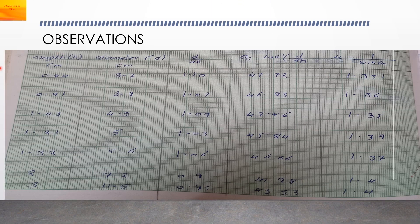Observations: The depth of the water is changed to values of 0.84, 0.91, 1.03 cm and so on, and for each depth the diameter of the dark ring is measured as 3.7, 3.9, 4.5 cm respectively. The depth is measured using vernier calipers and the diameter on the graph paper. Then d/4h is calculated, followed by the critical angle θc = tan⁻¹(d/4h), and finally the refractive index μ = 1/sin θc. The values of refractive index of water obtained are in the range of 1.3.